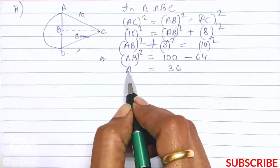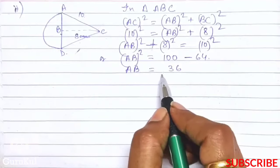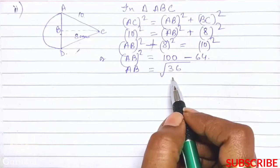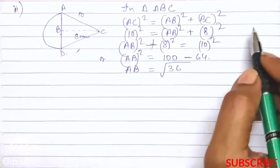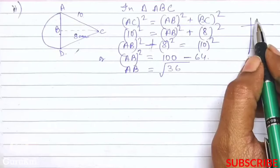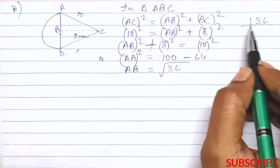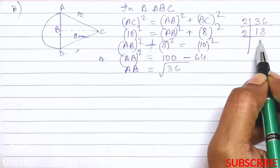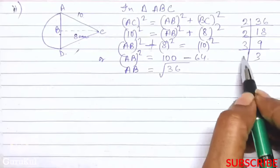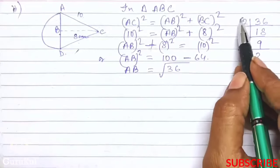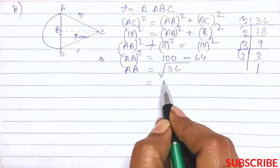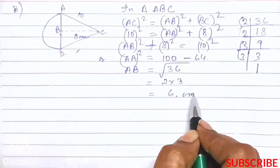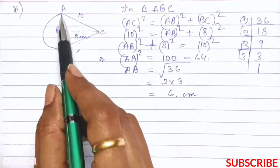To find the square root, we find the prime factors of 36: 2, 18, 2, 9, 3, 3, and 3, 1. Pairing gives us 2 into 3 which is 6 centimeter. So the measurement of AB is 6 cm.